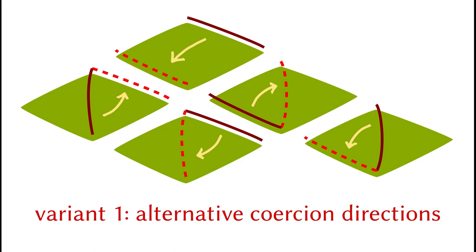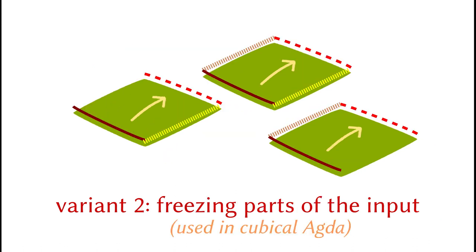There are also a few variants of the coercion operator. The first variant is to allow more flexible starting and ending locations. You can coerce an element in the opposite direction, or choose to start from or end with the diagonal. It is similar to the variant we saw for homogeneous composition. The second variant can freeze some parts of the input during coercion so that the result will agree with the initial elements in those parts. For example, if you add the yellow restriction that freezes the right end, the result will coincide with the inputs on their right endpoints, judgmentally. We will use these variants in cubical Agda.